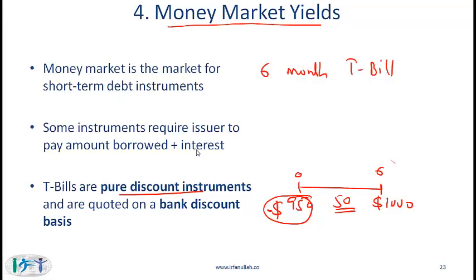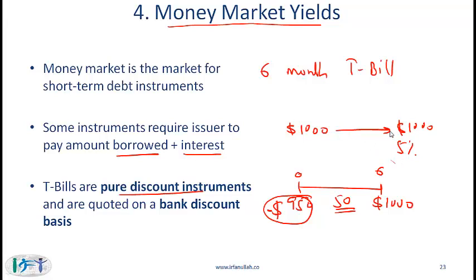We also have short-term instruments which are based on a borrowed amount plus interest. It is possible that a company issues a short-term bond where the company borrows $1,000 initially and then pays back $1,000 plus 5% interest at the end of one year. In any case, the market where short-term instruments such as this trade is called the money market, and in this segment we will talk about the various kinds of yields used in this market.